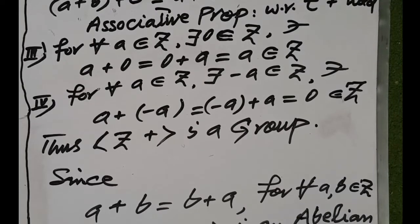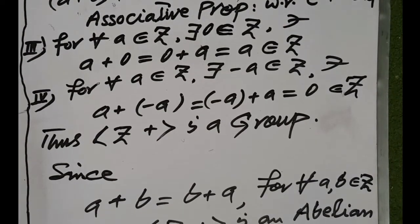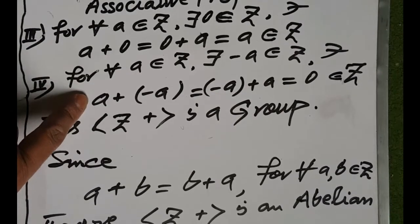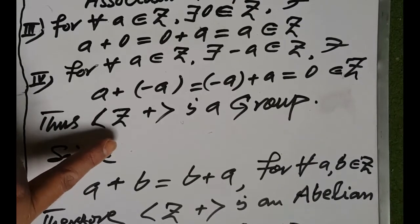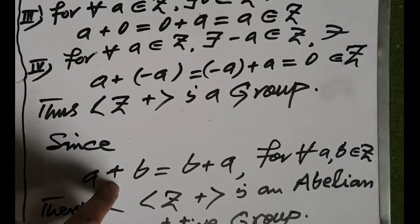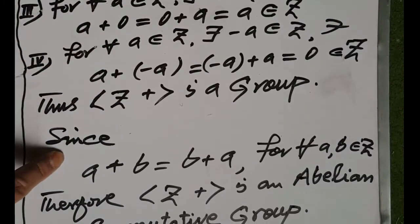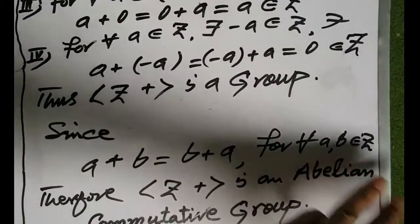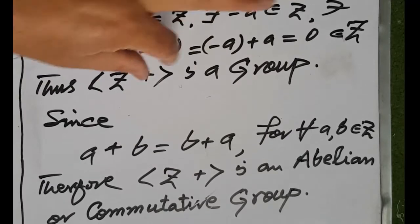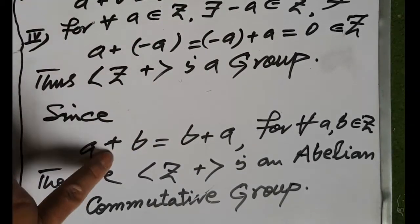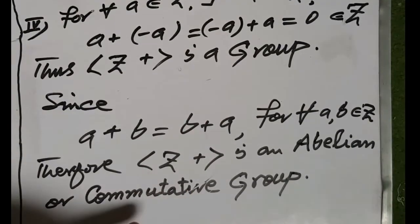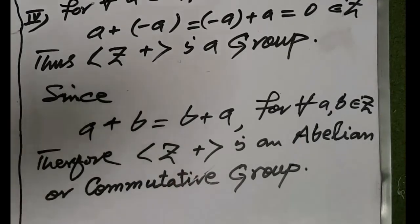Therefore, for each element of the set Z, its inverse exists in the set Z. Thus the set Z with respect to the binary operator addition is a group. Also, addition is commutative in the set Z of all integers, since a plus b is equal to b plus a for each a, b belonging to Z. Therefore the set Z with respect to addition is not only a group but also a commutative group or abelian group with respect to the binary operator addition.